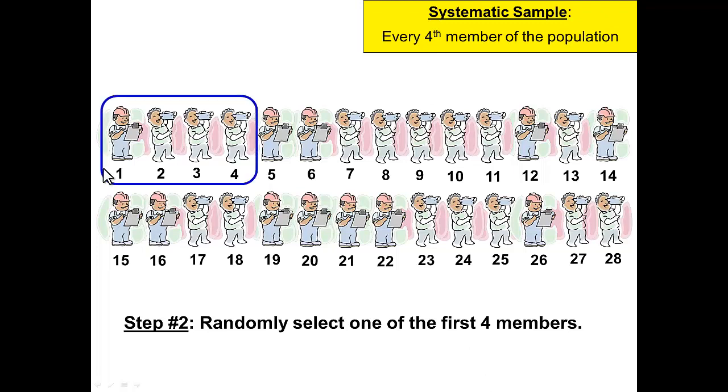So out of these first four we need to randomly select one. We'll use the calculator random integer one comma four and use that command to randomly select one. When Ms. Borlaug did this, she ended up selecting person number three. If you do this at home, you could, of course, get a different answer.